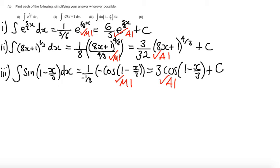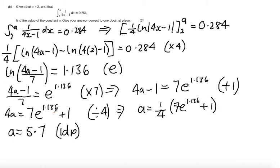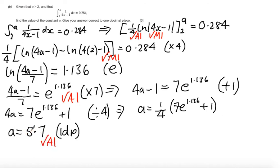For part b: a method mark for integrating 1 over (4x minus 1) to get log(4x minus 1), and an answer mark for the correct coefficient of 1 quarter. A method mark for substituting in the bounds to set up an equation. An answer mark for reaching the stage where (4a minus 1) over 7 equals e to the power of 1.136. Finally the last mark for solving to get a equals 5.7 to one decimal place.